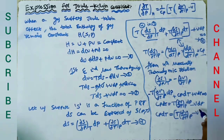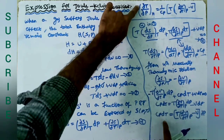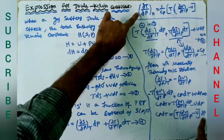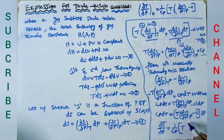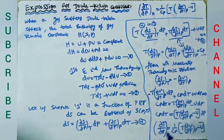Rearranging, Cp dT equals T times (∂V/∂T) at constant P minus V, times dP. Dividing both sides gives the final expression: (∂T/∂P) at constant H equals (1/Cp) times [T times (∂V/∂T) at constant P minus V]. This is the required expression for the Joule-Kelvin coefficient.